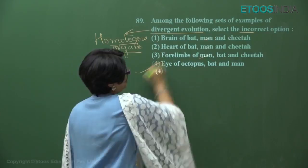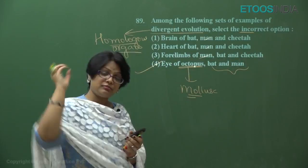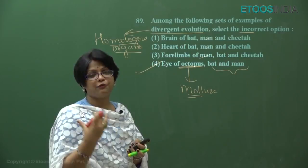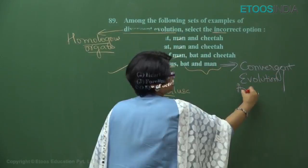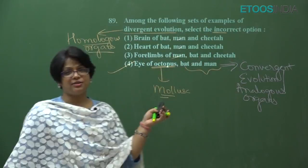The fourth option: eye of octopus, bat, and man. Octopus is a mollusk — a non-chordate — while bat and man are mammals, that is vertebrates and chordates. They could not have the same origin. But because eyes perform the same function of vision, this is an example of convergent evolution — analogous organs. This is the answer because they asked which is not homologous. The answer is option four.